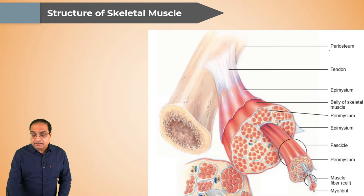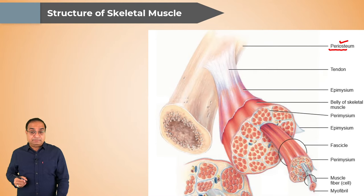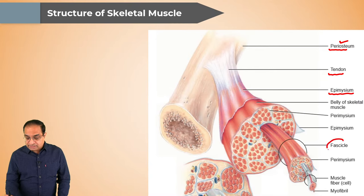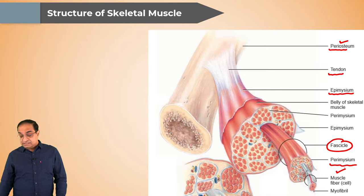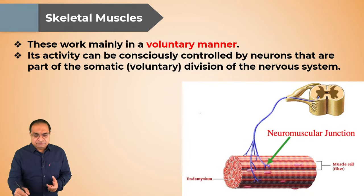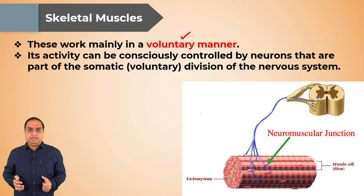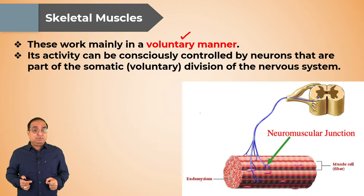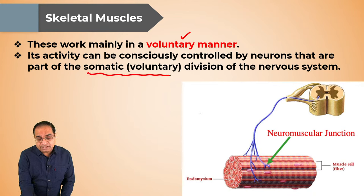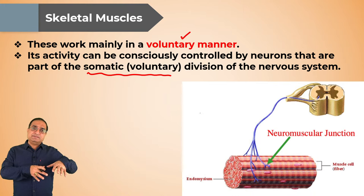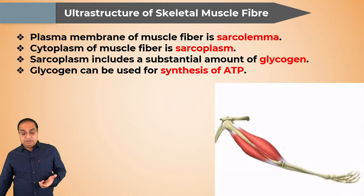The outermost layer of the muscle is epimysium. The muscle is made of many fasciculi covered by perimysium, and fasciculi are made of muscle fibers covered by endomysium. Skeletal muscle fibers are voluntary — under conscious control. You can contract or relax them at will, and this activity is consciously controlled by neurons which are part of the somatic or voluntary division of the nervous system.